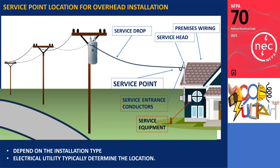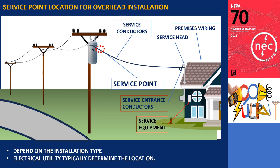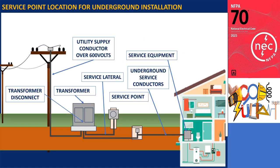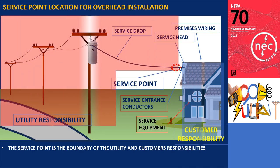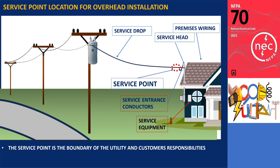The service point can be found near the service entrance or extend only up to the transformer disconnect in certain scenarios. For underground installations, the service point may be situated in the handhole or extend only up to the transformer disconnect. The service point serves as the dividing line between the utility's responsibility and the customer's responsibility. Moreover, the associated terminology undergoes changes depending on the location of the service point.